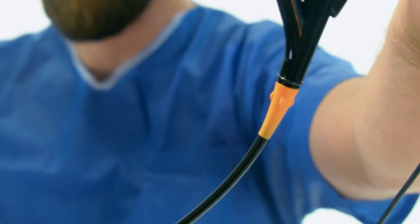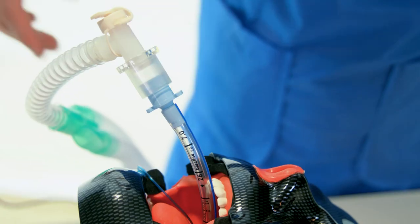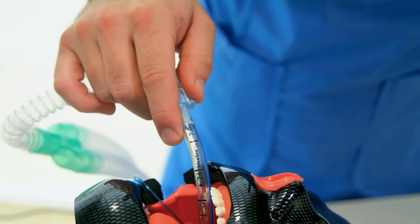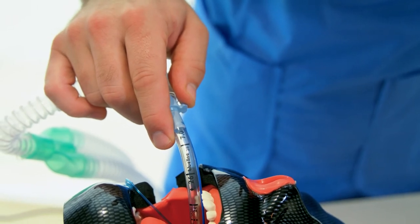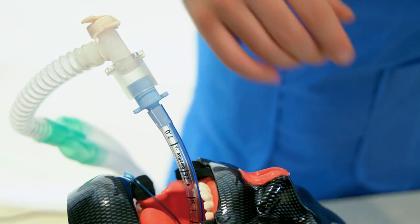BroncoFlex Vortex can fit in endotracheal tubes of 6 mm or larger. Compatibility with the patient's ET tube should always be verified.